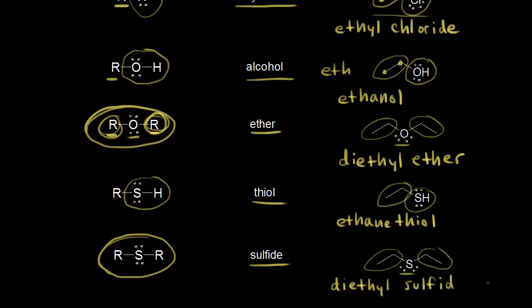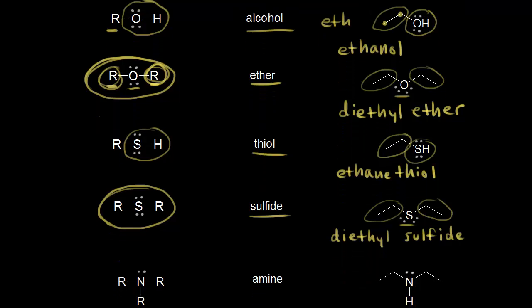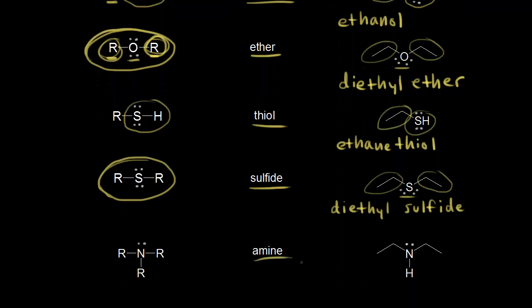And finally for this video, one more functional group. This is an amine. For this amine we have nitrogen, and then we have three R groups attached to nitrogen. Or you could be talking about hydrogens here. So any of these could be hydrogens as well. On the right is an example of an amine.